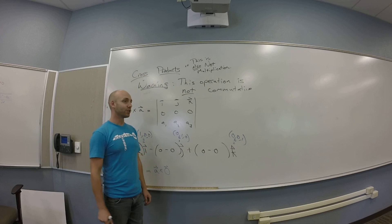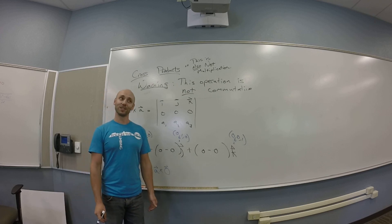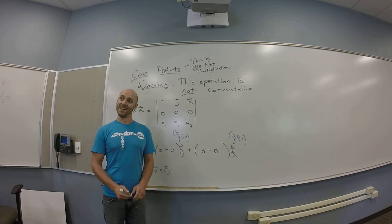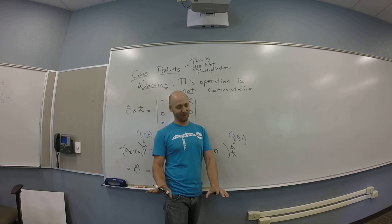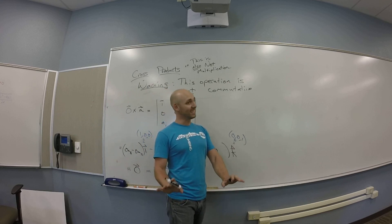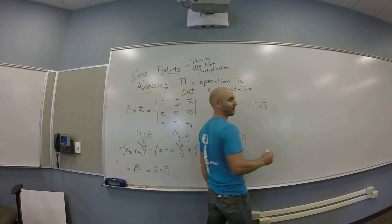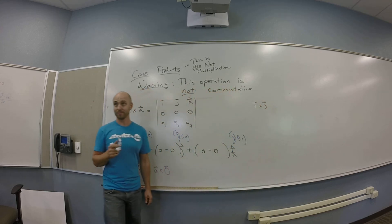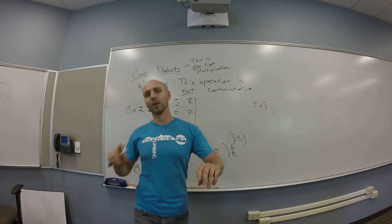We should also do some other examples because I still don't know what this means or does. So, what are other good examples that are going to be pretty easy? No, let's not do the one, one, one. That's too complicated for us right now. Let's do an easier one. Let's calculate I crossed with J. Okay, actually, in fact, I'm going to pause this.